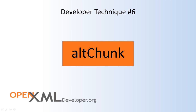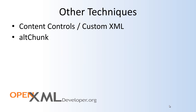The next tool you should have in your toolbox is AltChunk. AltChunk is an approach by which you can import varieties of content in a variety of formats into an OpenXML word processing ML document. For instance, you can import HTML, another word processing document, plain text, or MHT files — which are a single file format for HTML that includes all of the binary images and so on.